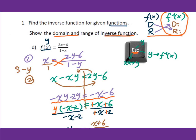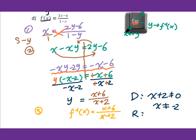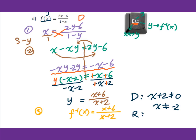Now find the domain and range of this inverse function. Since it is a rational function, the domain requires the denominator not equal to 0, so x not equal to negative 2. For the range, since a rational function gives no direct clue, we go back to the original function and find its domain: set 1 minus x not equal to 0, giving x not equal to 1. The domain of the original function becomes the range of the inverse function, so y not equal to 1.